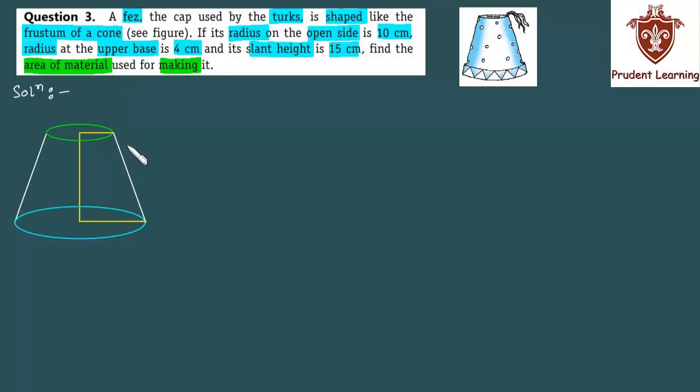In this question we are given a cap shaped like a frustum of a cone. Its radius on the open side is 10 cm, the radius of the upper base is 4 cm, and its slant height L is 15 cm. We are required to find the area of the material used for making this cap. Let's get straight to the solution.